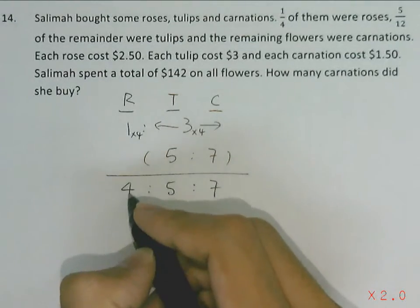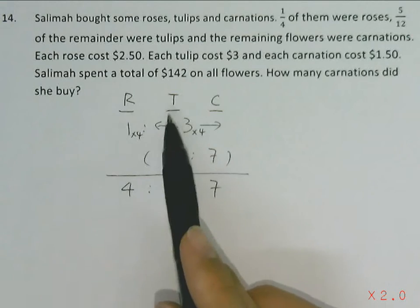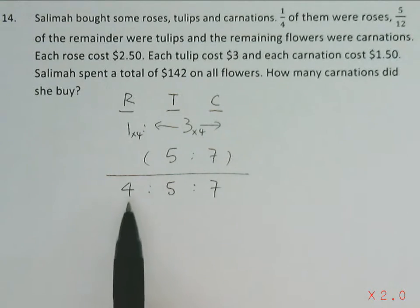With the number of roses, we have a ratio of 4. So now we have the combined ratio of roses to tulips to carnations being 4 to 5 to 7.